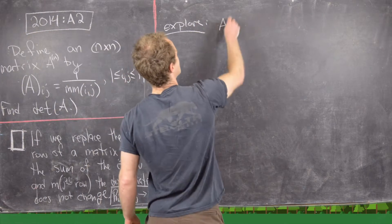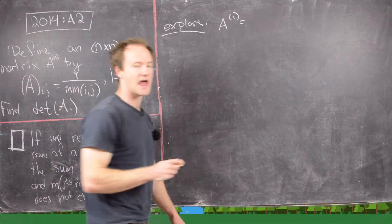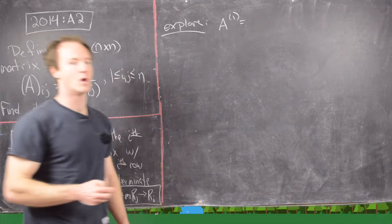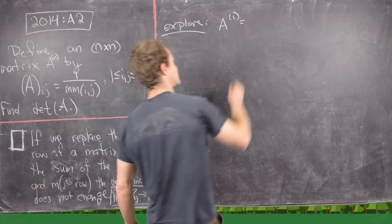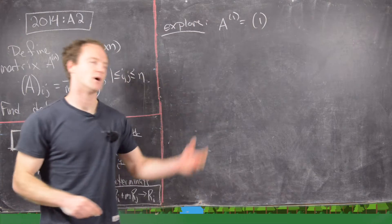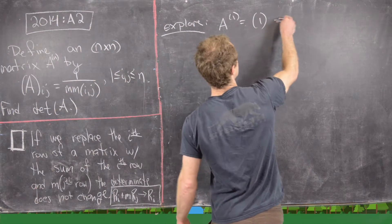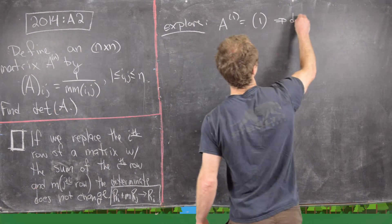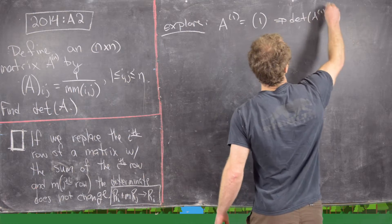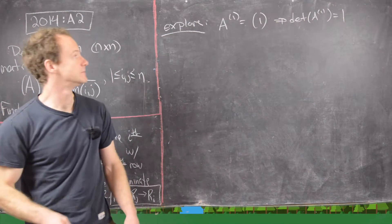Let's look at n equals 1. A^1 is a 1 by 1 matrix, which is just the number 1. Obviously the determinant of this is 1.